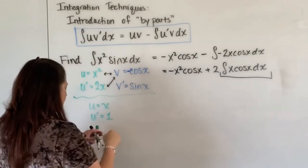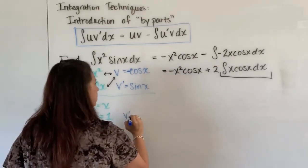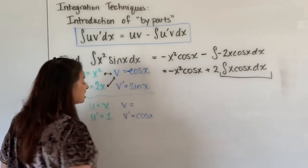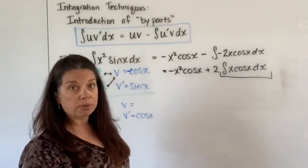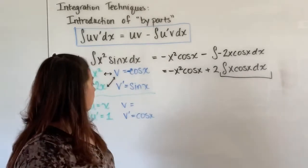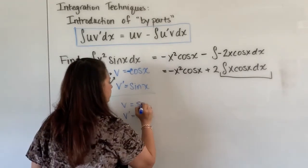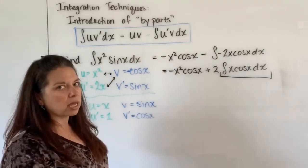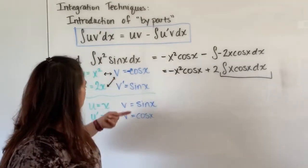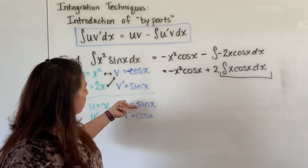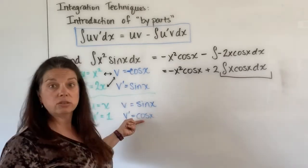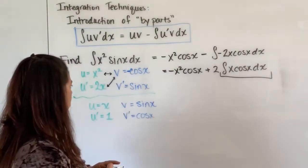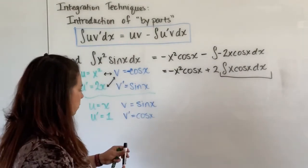And then we have our v prime is cosine x and now we need to find the anti-derivative of that v prime. Well the anti-derivative of cosine x will be sine x and then just again to make sure you have all the signs correct think about well if I were to find the derivative of sine x is that derivative of sine x actually cosine x? Yes it is so that's all good there.